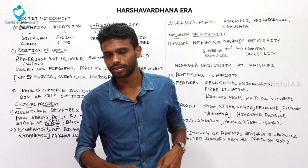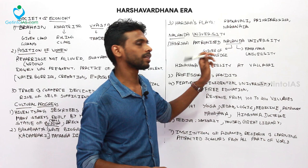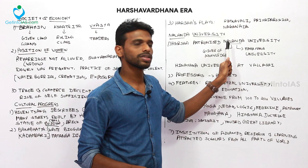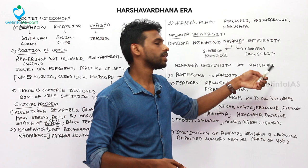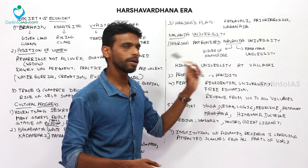Nalanda University was first established during the Gupta period by Kumara Gupta, and became famous under Harsha's patronage. Nalanda means 'giver of knowledge.' The university was a center for Mahayana Buddhism. There was also a Hinayana university at Vallabhi. The professors of Nalanda University were called Pandits.